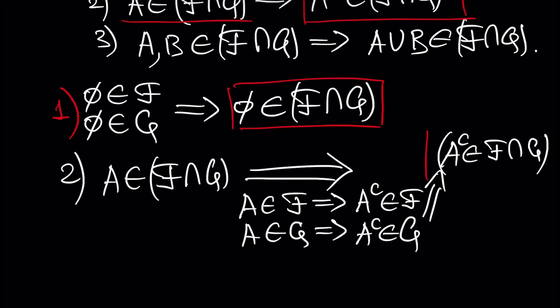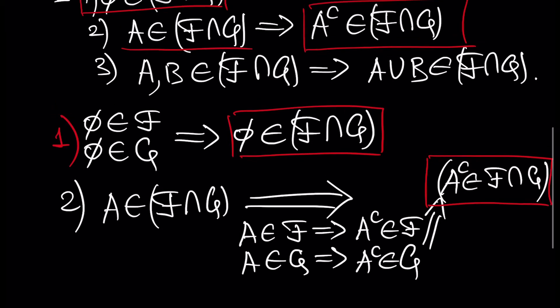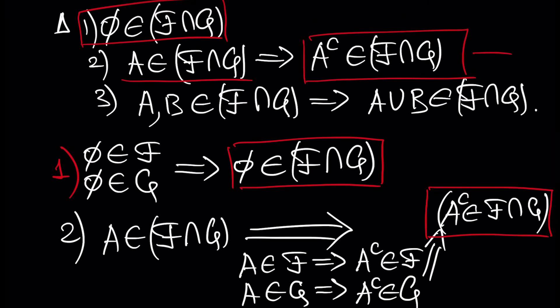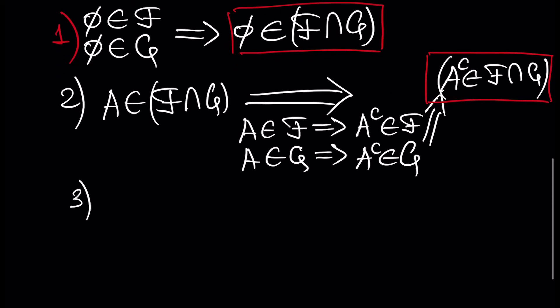So that was the second part of our definition. Next, let's show the third part: if A and B are inside this intersection of sigma algebras, then the union A ∪ B is also inside this intersection.